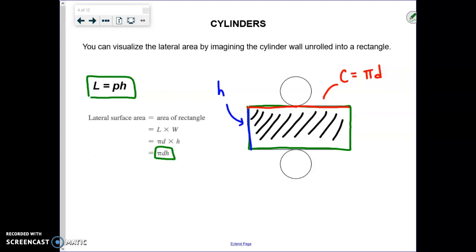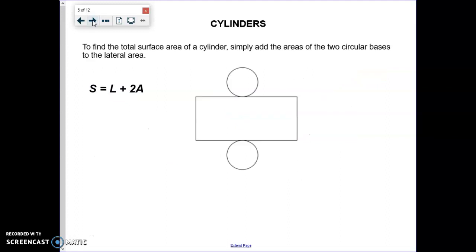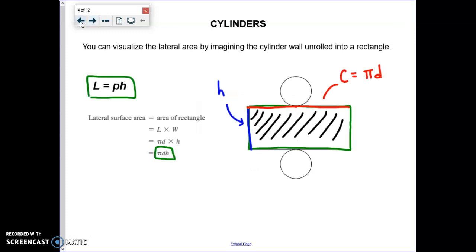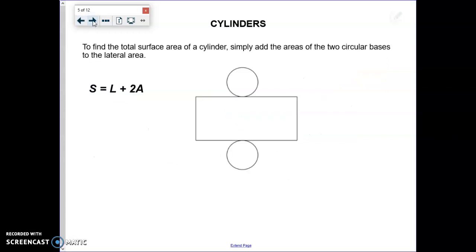As long as you remember perimeter of the base times height, you're okay. Now, to find total surface area, you just take the lateral area which you just found and add in the area of the two bases.